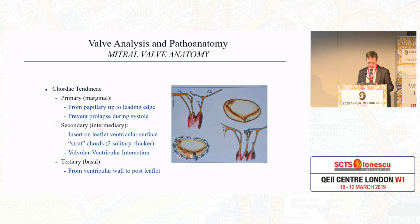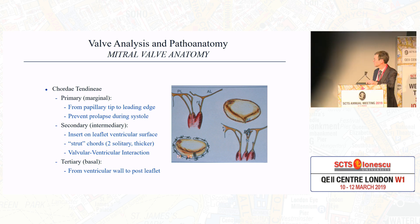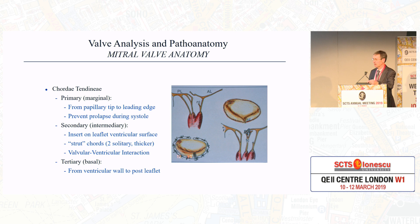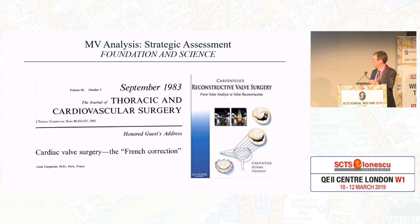As far as the mitral valve goes, we've got the chordae tendineae and their primary or secondary cords. The primary go to the leading edge, and the secondary cords insert on the ventricular surface of the leaflet and are important for valvular-ventricular interaction. The tertiary or basal cords extend from the posterior wall of the ventricle to the posterior leaflet, and some believe it's important to maintain these to minimize risks of AV groove disruption if we're doing mitral valve procedures.